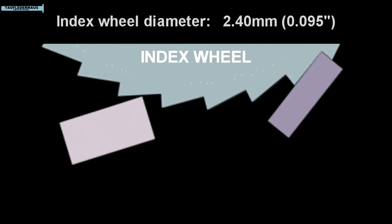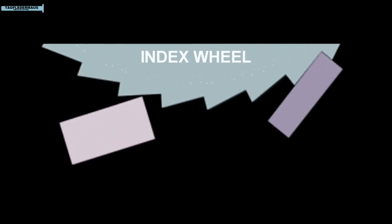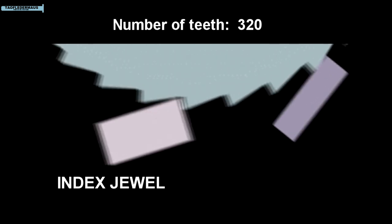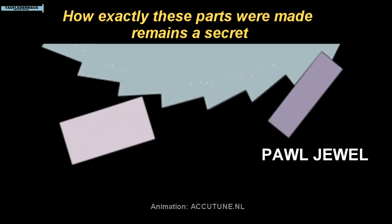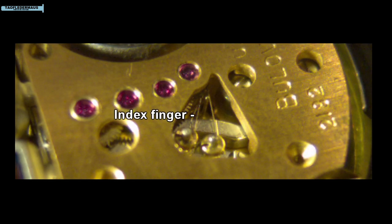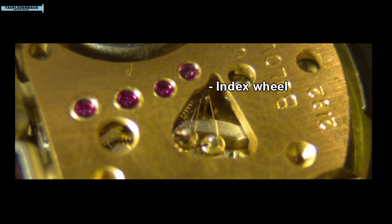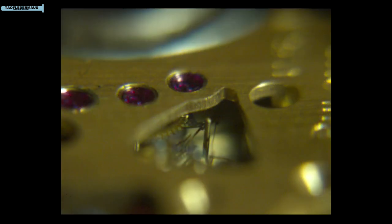The Accutron has a tiny gear called an index wheel. This thing only is 2.4 millimeters in diameter but has 320 teeth on it. Each vibration from the tuning fork drives this gear one tooth at a time ahead. The tiny jewel on the end of the index finger is driven directly by the tuning fork. The pawl finger remains stationary and prevents the index wheel from rotating backwards. And bear in mind this is occurring 360 times a second.